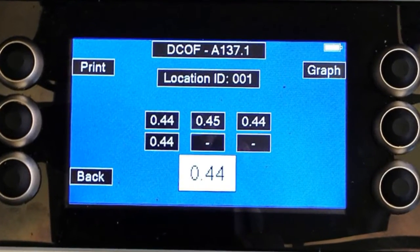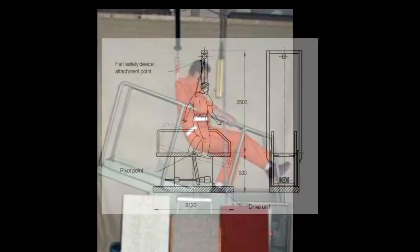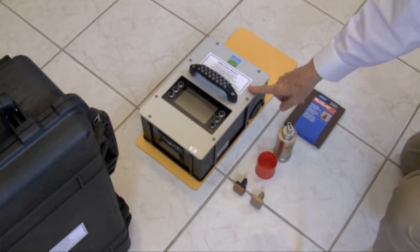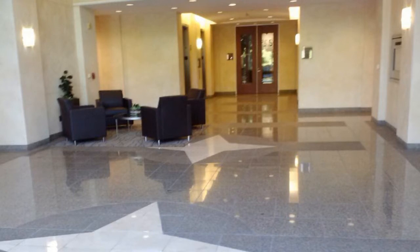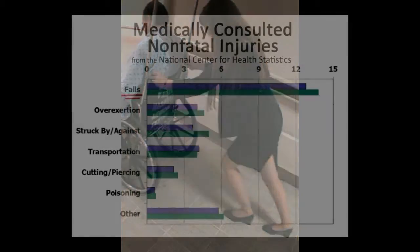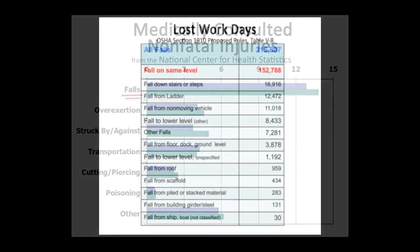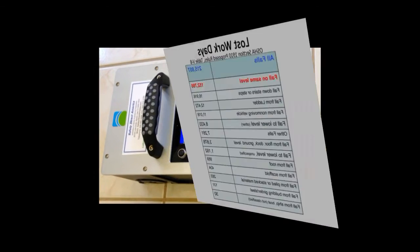With its simple interface and reliable results based on extensive international floor slip resistance testing research, the BOT 3000E is a must-have instrument for anyone who owns or maintains commercial hard flooring. Slips and falls account for an outrageous number of hospital visits and missed work days.